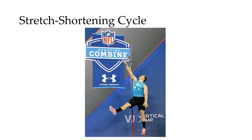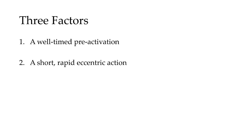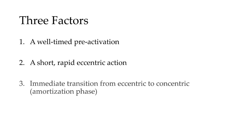This leads us to the stretch-shortening cycle. The stretch-shortening cycle occurs whenever there is an eccentric action followed by a concentric action, such as when you do a counter-movement before you jump. But not all eccentric actions produce the stretch-shortening cycle equally well. To be effective, the stretch-shortening cycle involves three factors: first, a well-timed pre-activation of the muscle; second, a short, rapid eccentric action; and third, an immediate transition from eccentric to concentric action. This transition is known as the amortization phase, and to be effective, it has to be extremely short.